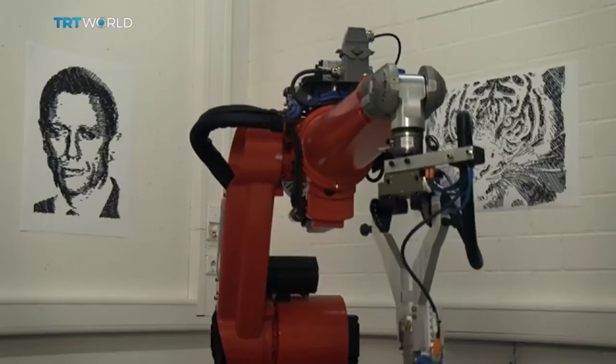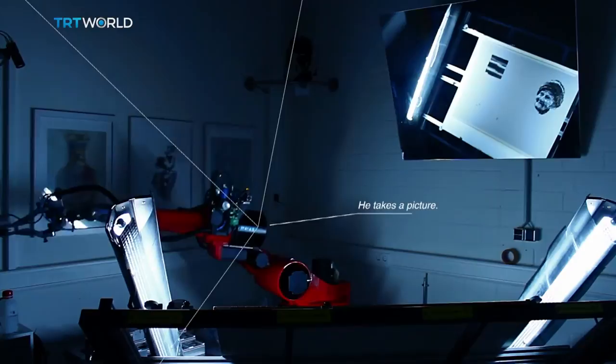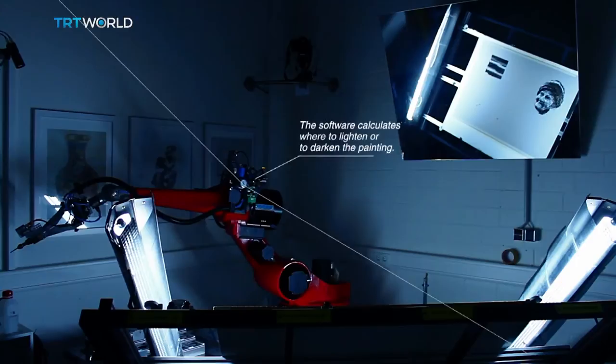E. David uses visual feedback from a built-in computer that takes photographs of the canvas. The photos are analysed to work out the difference between the canvas and the input image to be painted.